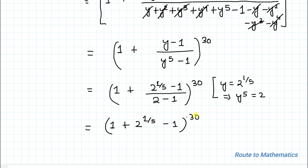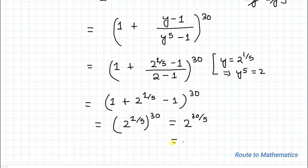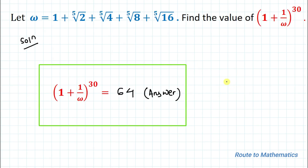Here we have plus 1 and negative 1, which cancel out, leaving 2 to the power of 1/5, whole to the power of 30. Applying the exponential law a to the power of mn, the powers multiply: we get 2 to the power of 30 over 5, which is 2 to the power of 6, and that equals 64. Thus our answer is 64.